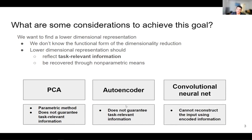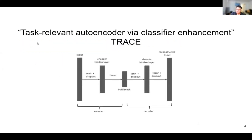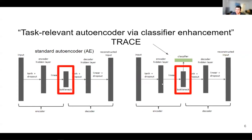CNNs cannot reconstruct input using encoded information. That's why we are developing the task-relevant autoencoder via classifier enhancement — TRACE. It is basically an autoencoder, except you attach a classifier to the bottleneck to ensure that the encoded features in the bottleneck are task-relevant. We have two networks, and we increase the dimensionality of the bottleneck from 2 to 1500, looking at how the behavior changes as a result of the change in bottleneck dimensions.